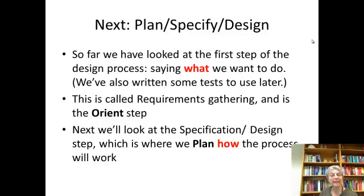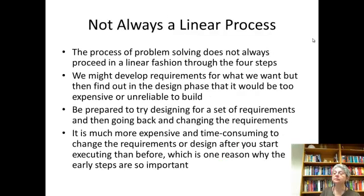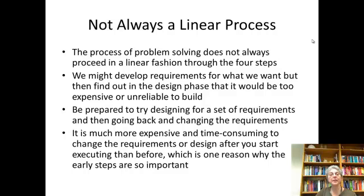That was an example of doing the requirements — we developed some tests to go with our use cases. That was the orient step. Next is the specification step, the how. This is not always a linear process; we may do some requirements, go to the design, see something that doesn't work, come back and change the requirements, do the design again, and iterate until we get requirements and a design we can live with. It's much more expensive to change things after you've sent the plan to the factory and built the machine, so doing these initial steps carefully is so important.